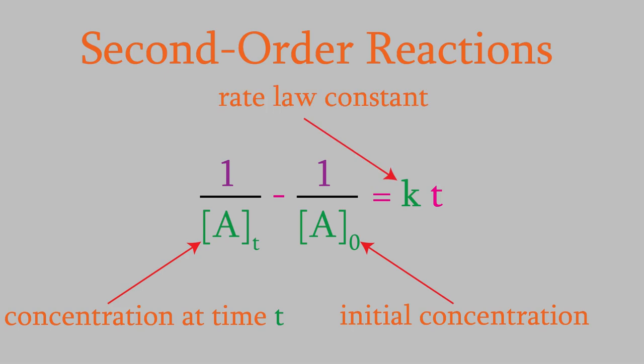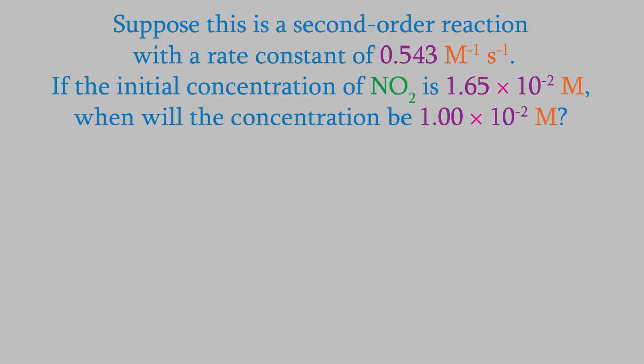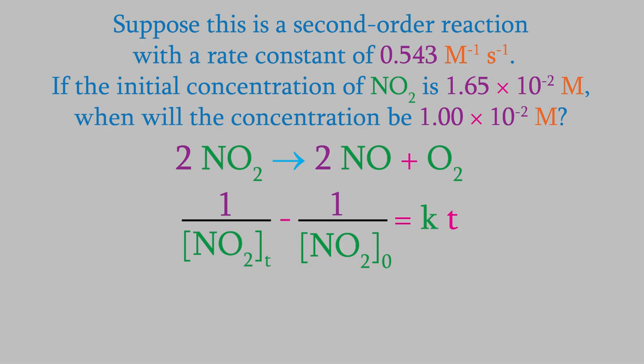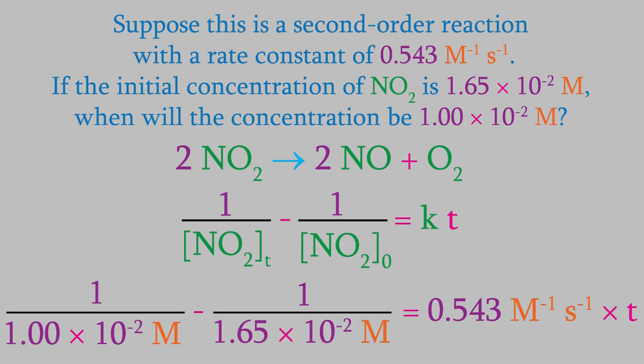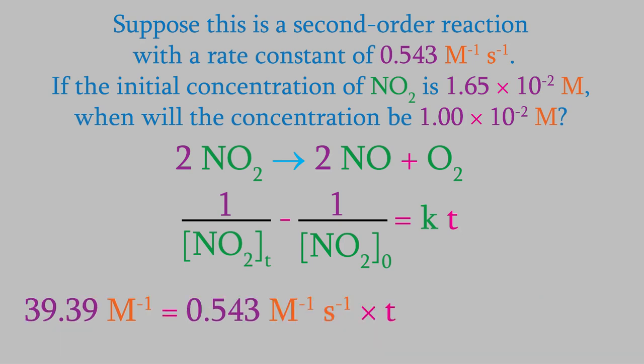Let's try using this to find the amount of time needed for a reaction. Suppose we have this second-order reaction, which has a rate constant of 0.543 M⁻¹·s⁻¹. If the initial concentration of nitrogen dioxide is 1.65 × 10⁻² molar, how long will it take for the concentration to drop to 1.00 × 10⁻² molar? We'll use this equation to find the amount of time. We know the two concentrations and the rate constant, so we'll plug those in. When we subtract the two fractions on the left, we get 39.39. Next we solve for T, and we get 72.55 seconds — so that's how long our reaction takes.